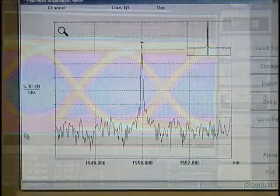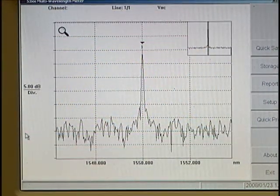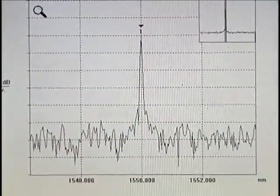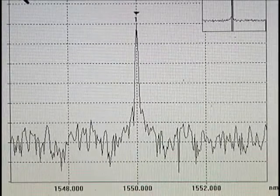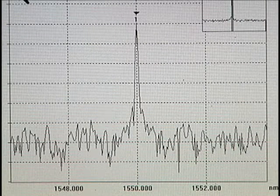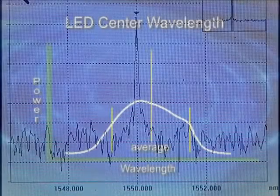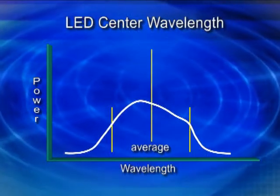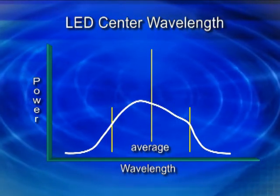Optical sources for communication applications can be characterized by their center wavelength and spectral width. In a laser, central wavelength is the wavelength defined by a peak mode measurement where a majority of the optical power resides. In an LED, it is the average of the two wavelengths measured at the half amplitude points of the power spectrum.